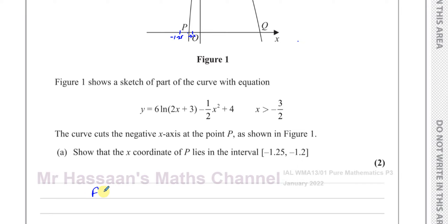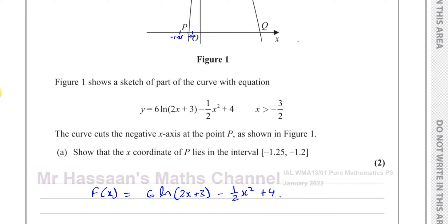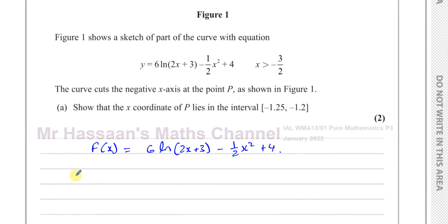I'm going to rewrite this as f(x) equals 6 ln(2x + 3) minus one half x squared plus 4. We know that on the x-axis, y is equal to 0, so f(x) is equal to 0.